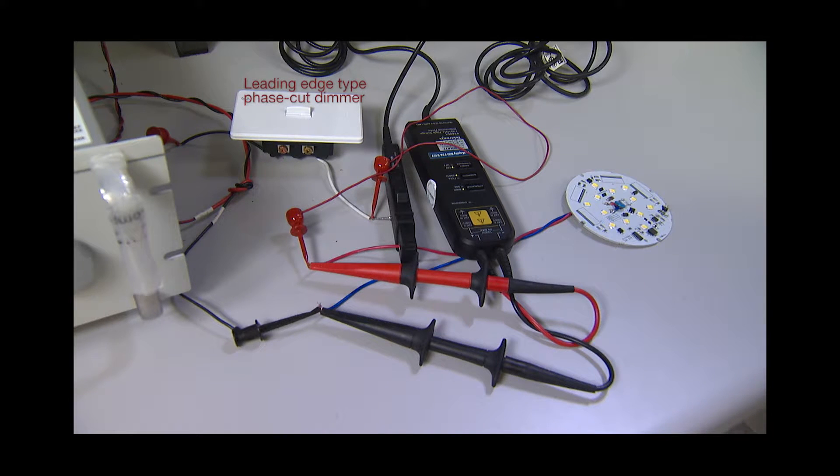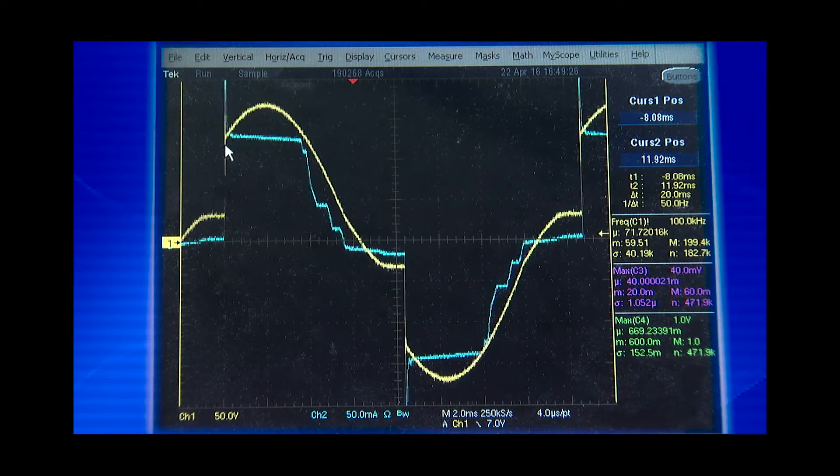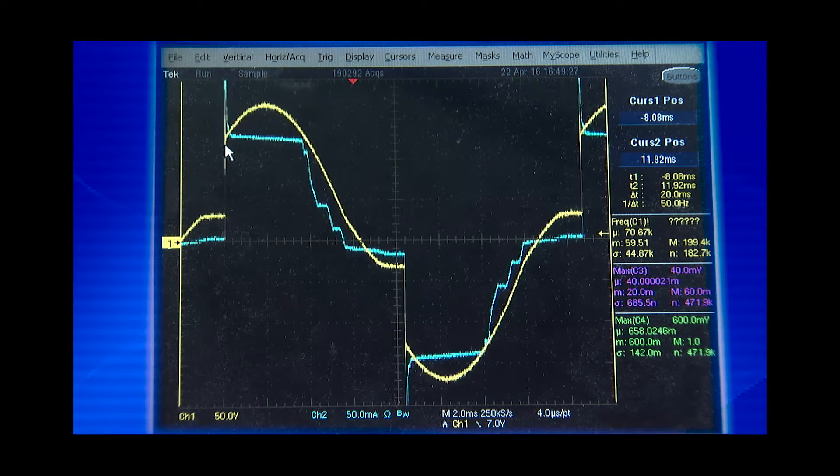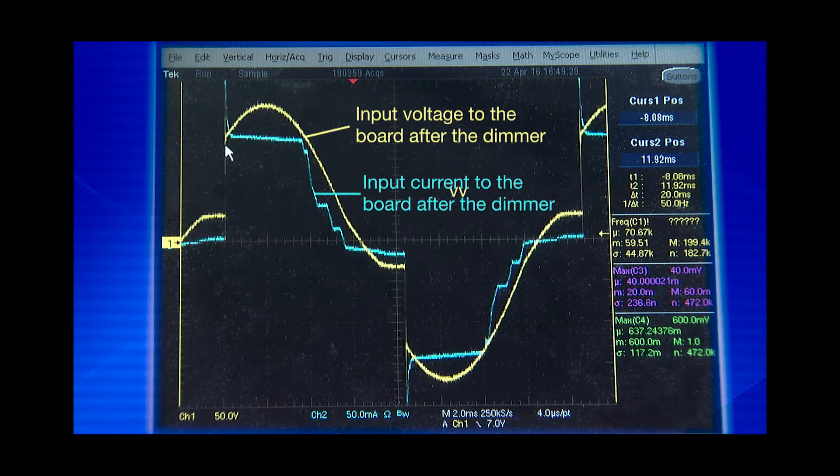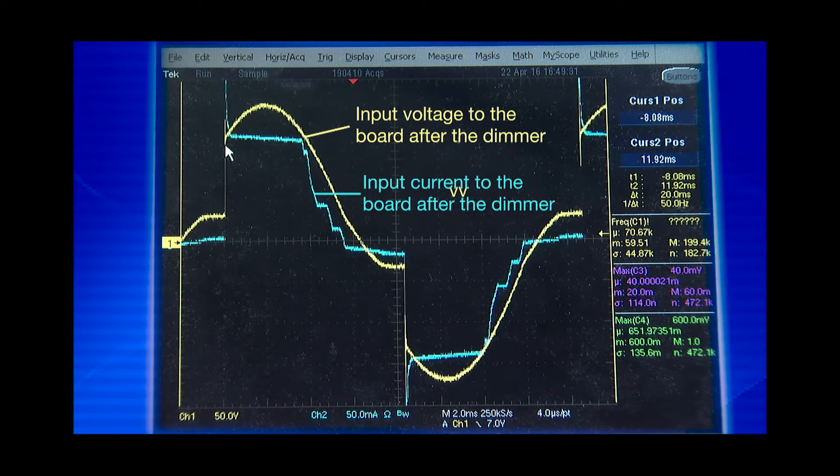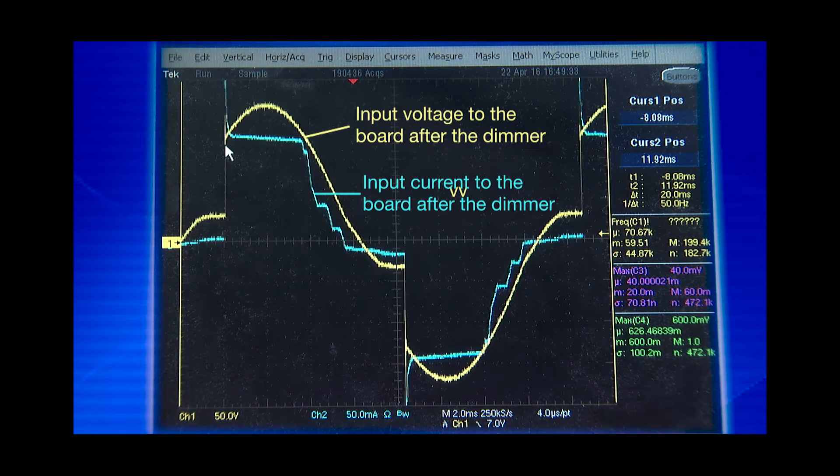The board has been now connected to a leading-edge type phase cut dimmer to see how the brightness changes from low to high phase angle. The phase cut dimmer chops up the 120V input line voltage from the AC power source before feeding it onto the LED board.